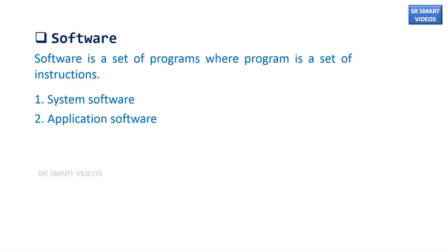Software is a set of programs, where a program is a set of instructions. Software can be divided into two types: system software and application software.